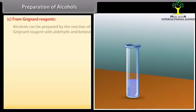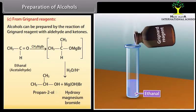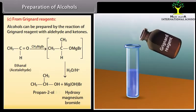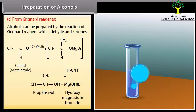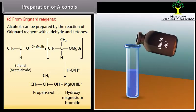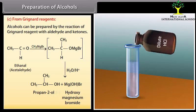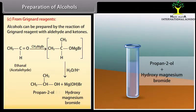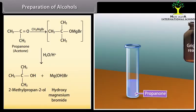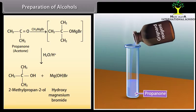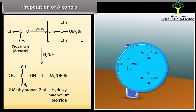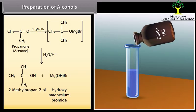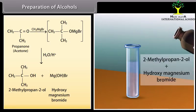Preparation of alcohols from Grignard reagents: alcohols can be prepared by the reaction of a Grignard reagent with aldehydes and ketones. A Grignard reagent reacts with ethanal to form a product which decomposes with dilute HCl to give propan-2-ol and hydroxymagnesiumbromide. A Grignard reagent reacts with propanone to form a product which decomposes with dilute HCl to give 2-methylpropan-2-ol and hydroxymagnesiumbromide.